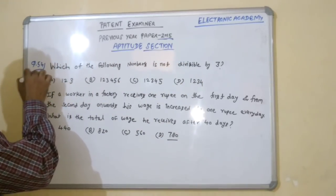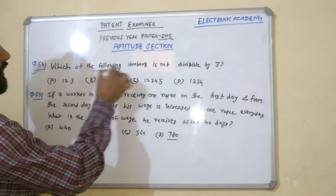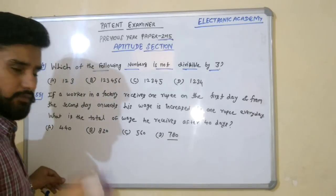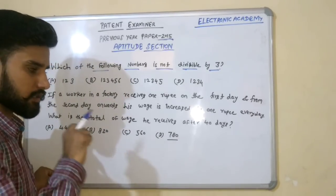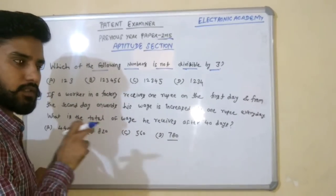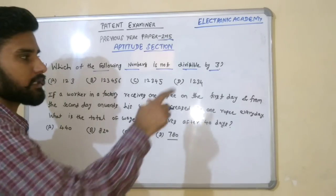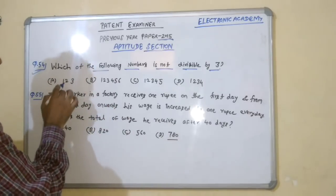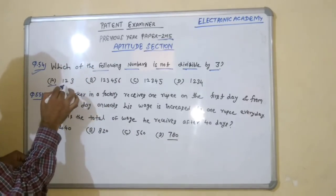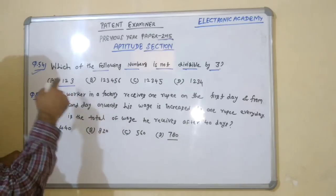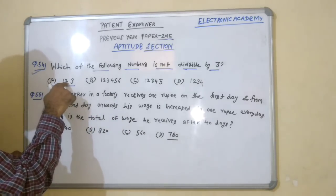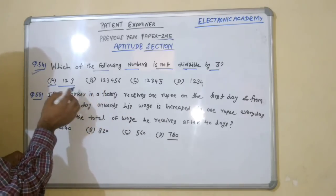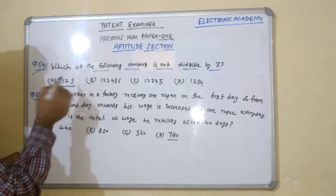Now let's start the 54th question: which of the following numbers is not divisible by 3? The divisibility rule for 3 is: take any number, if the sum of all its digits is divisible by 3, then that number is divisible by 3, otherwise not. Let's check option A: sum of digits is 1 + 2 + 3 = 6. Whether 6 is divisible by 3 — yes, divisible by 3. So this number is divisible by 3.